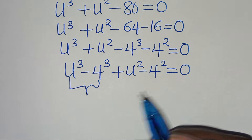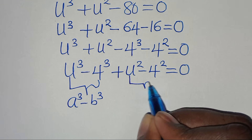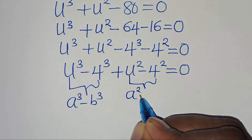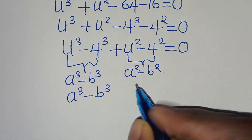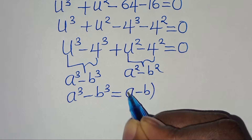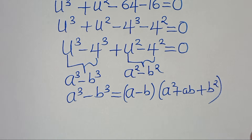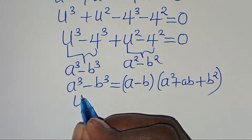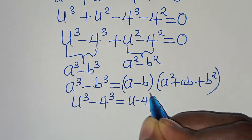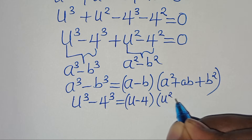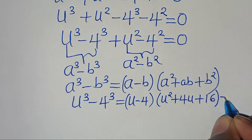We have got two parts here. The first is the difference of two cubes, expressed as a³ minus b³. The identity for difference of cubes can be expressed as a minus b, then a squared plus a times b, then plus b to the power of 2. Applying this identity, u to the power of 3 minus 4 to the power of 3 becomes u minus 4, times u squared plus 4u plus 16. Let's call this equation 1.